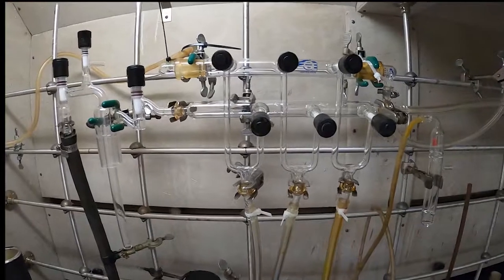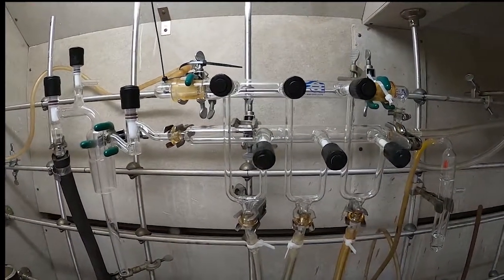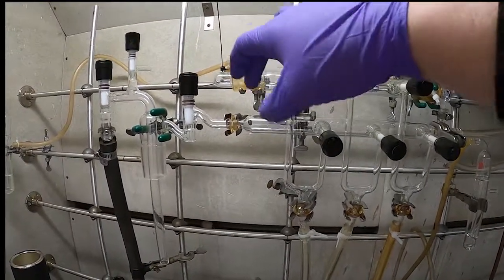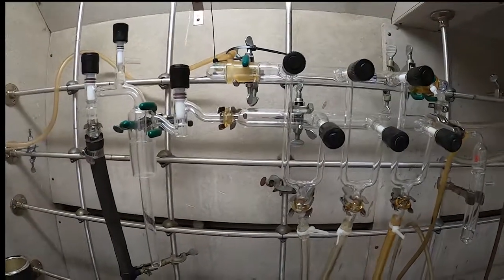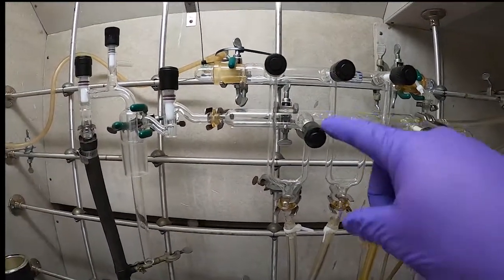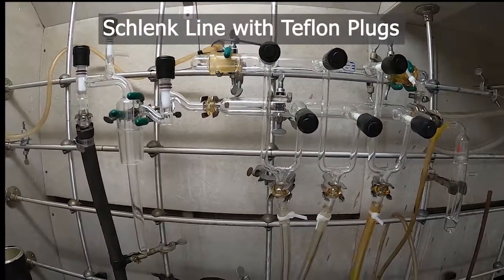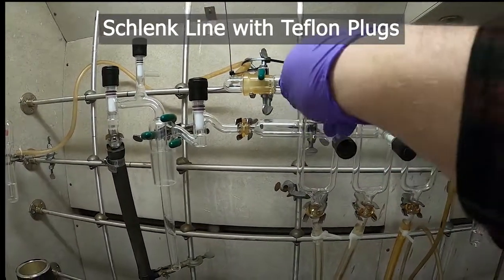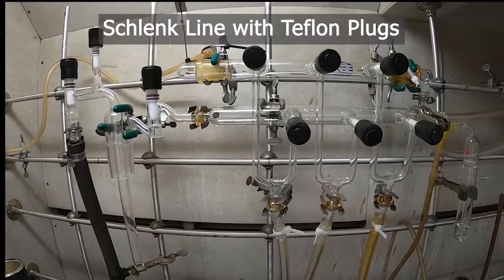The Schlenk line is an apparatus that allows us to perform reactions under inert atmosphere. They consist of two glass tubes that are connected to various ports. There are two styles that vary on the way the ports are set up. This is the type with Teflon stoppers. These can allow the flow of either your inert gas or open up to your vacuum line.